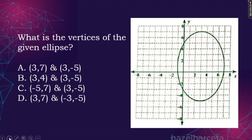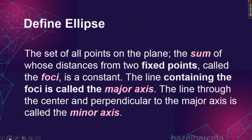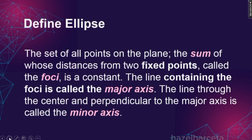Para mas maintindihan natin, let's start. Let us define ellipse. What is an ellipse? It is the set of all points on the XY plane the sum of whose distances from two fixed points called the foci is a constant. So yung sum ng distances ng isang point sa dalawang foci ay pareho ng sum ng distances ng isa ring point sa dalawang foci. The line containing the foci is called the major axis, so yung axis or line kung nasaan ang ating foci, center, at vertices ay major axis. And the line through the center and perpendicular to the major axis is the minor axis.